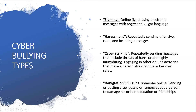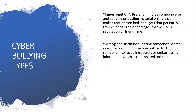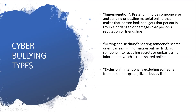There is denigration — dissing someone online, sending or posting cruel gossip or rumors about a person to damage their reputation or friendships. There's impersonation — pretending to be someone else and sending or posting material online that makes that person look bad, gets them in trouble or danger, or damages their reputation. There's outing and trickery — sharing someone's secret or embarrassing information online, or tricking someone into revealing secrets which are then shared online. And exclusion — intentionally excluding someone from an online group, like a buddy list.